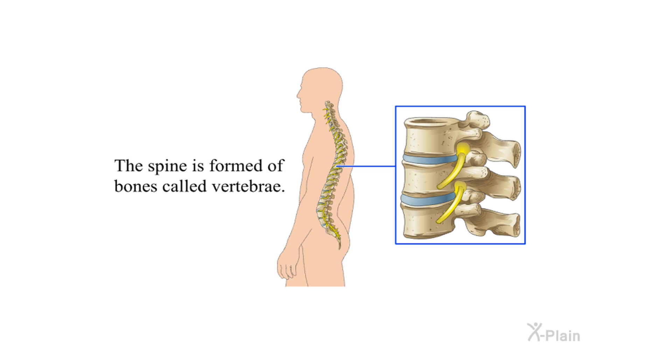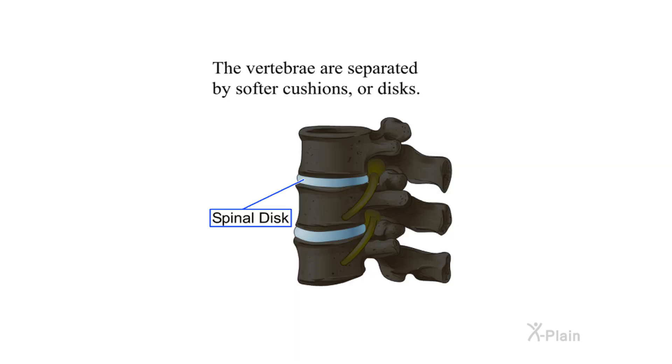The spine is formed of bones called vertebrae. The vertebrae are separated by softer cushions, or discs.